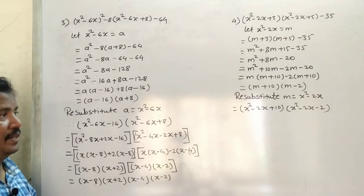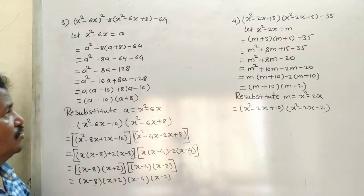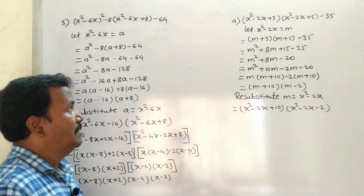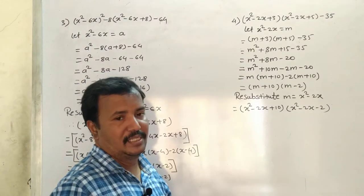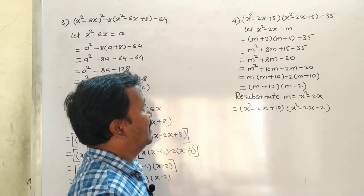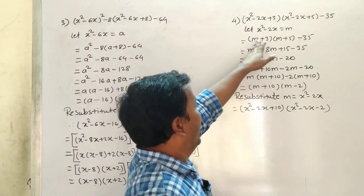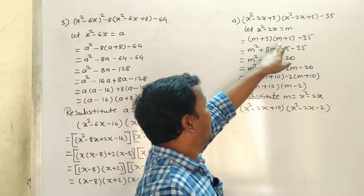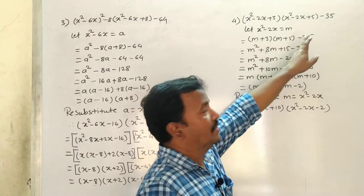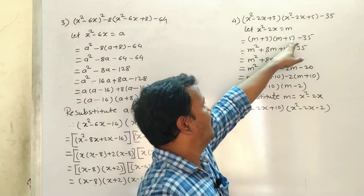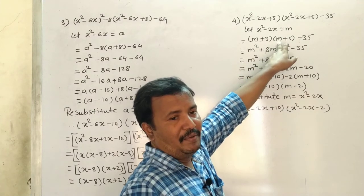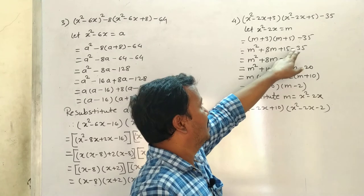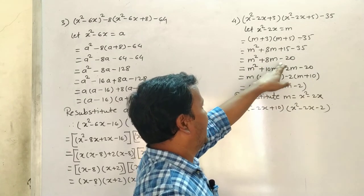Now sum 4: (x² - 2x + 3)(x² - 2x + 5) - 35. Here x² - 2x appears the same way in both, so let x² - 2x = m. Then we get (m + 3)(m + 5) - 35. Expanding: m² + 5m + 3m + 15 - 35 = m² + 8m - 20.